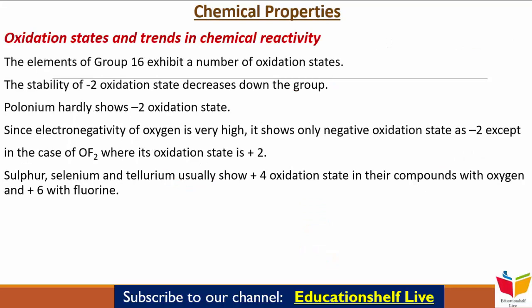अब चलते हैं Chemical Properties पे। Oxidation States की बात करें तो Group 16 elements में बहुत सारी Oxidation States होती हैं। -2 oxidation state की stability नीचे जाने पर कम होती है — Polonium hardly show करता है -2 state। Oxygen सिर्फ -2 state दिखाता है, except OF₂ जहाँ +2 होती है क्योंकि Fluorine अधिक electronegative है। बाकी elements +2, +4, +6 oxidation states दिखाते हैं, जिनमें +4 और +6 सबसे ज़्यादा common हैं।